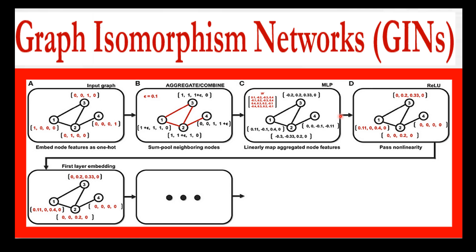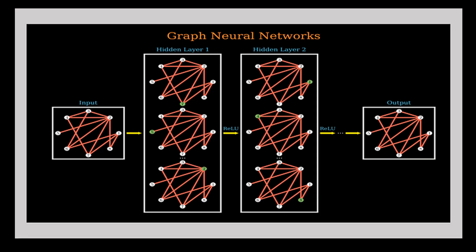In this example, the graph consists of nodes representing the borrower and other individuals and companies, with edges connecting them based on their financial relationships. The GIN learns patterns by analyzing the local neighborhood structure around each node — such as the financial characteristics of the borrower and their connections to other nodes in the graph — which allows the GIN to make accurate predictions about the borrower's credit risk based on the relations between them.